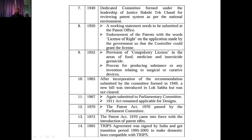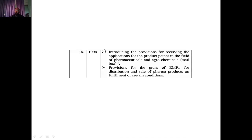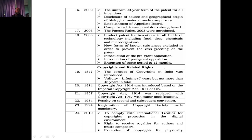The Patent Act 1970 came into force in 1972. In 1995, the TRIPS agreement was signed by India, which received a product transition period from 1995 to 2005 — almost 10 years — to make domestic laws compatible with TRIPS. In 1999, provisions for receiving applications for product patents in the field of pharmaceuticals and agrochemicals, known as the mailbox provision, were introduced, along with provisions for grant of Exclusive Marketing Rights (EMRs) for distribution and sale of pharma products.